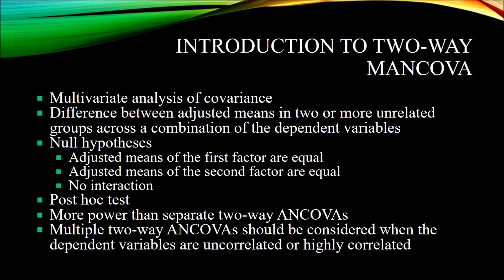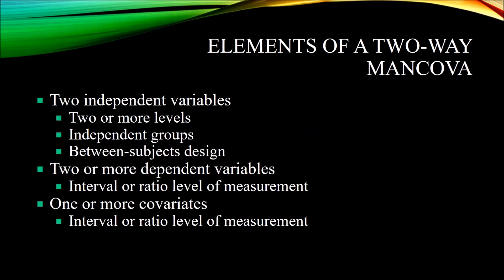There are instances where it may be better to consider performing multiple two-way ANCOVAs, and that's when the dependent variables are uncorrelated or highly correlated. Now let's look at the elements of a two-way MANCOVA. You have two independent variables, each with two or more levels, and those levels represent independent groups. With two-way MANCOVA, we have a between-subjects design. You also have two or more dependent variables that need to be measured at the continuous level of measurement — either interval or ratio.